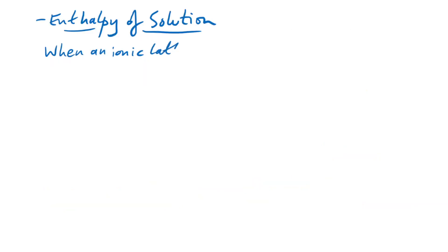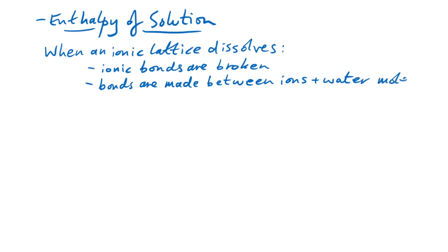Lastly, we have enthalpy of solution. We saw this in our definitions. And there's kind of two steps here when you dissolve an ionic lattice. First, all of the ionic bonds are broken and then bonds are made between the ions and the water molecule surrounding them. Now, because water molecules are slightly polar, that means that our slightly positive ends will stick, will bond to the negative ion in our ionic compound, whereas the more negative end at the oxygen will bond to the positive ions.